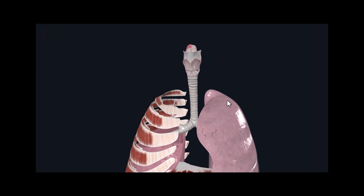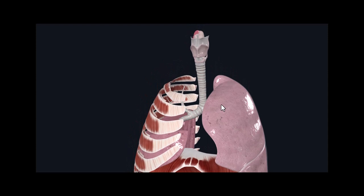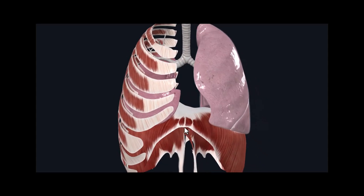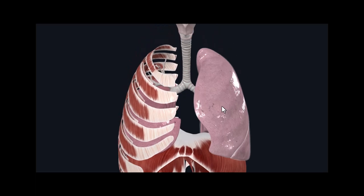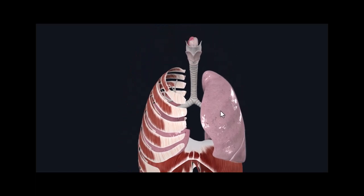Then we have diaphragmatic breathing, also called a deep breath. It's a little bit deeper than a normal quiet breath and requires the diaphragm. Usually it is somatic — you have to tell yourself to breathe in deeply. For example, if you're having a panic attack and you need to meditate, you take a deep breath in, hold it, and breathe slowly. That is a diaphragmatic breathing style.